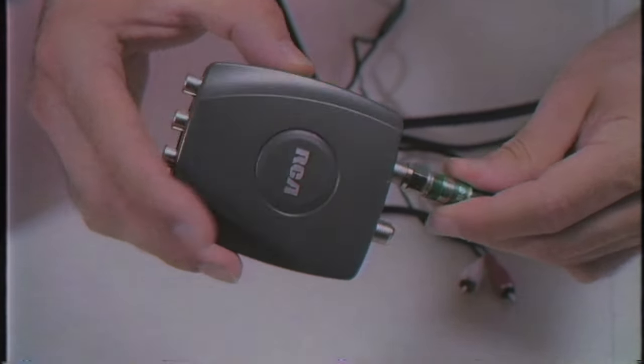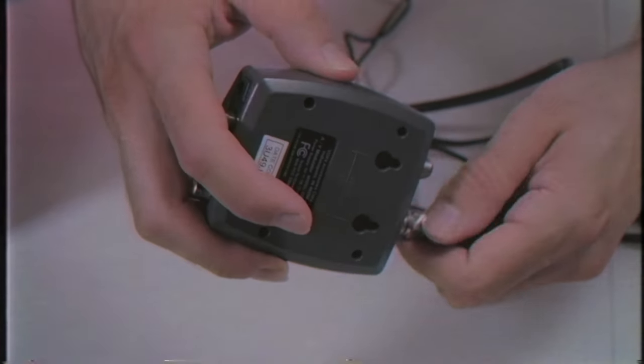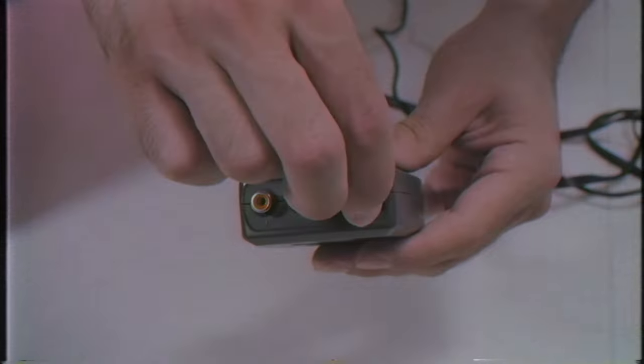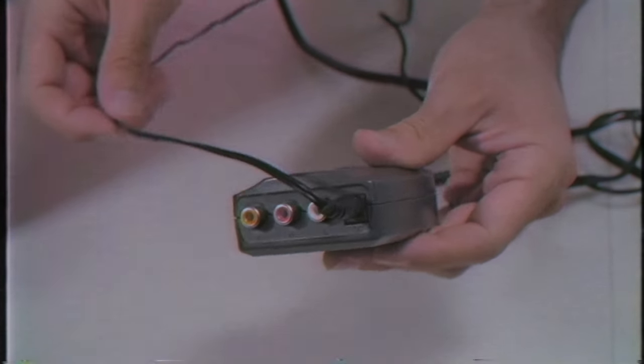First, connect your coaxial cable into your RF modulator. This modulator needs power, so connect the power cable.